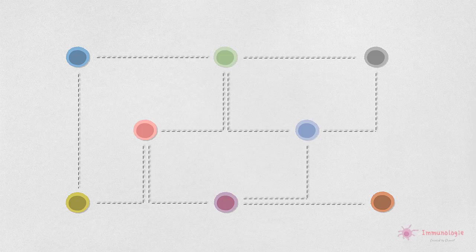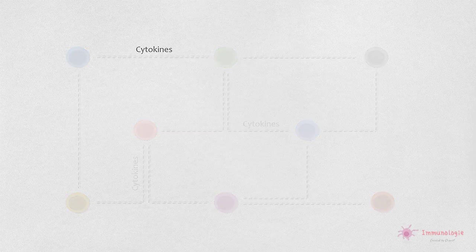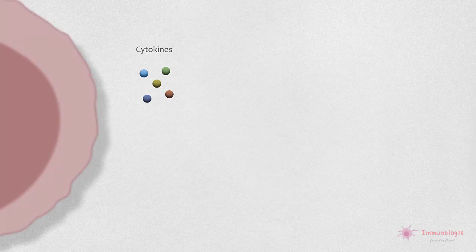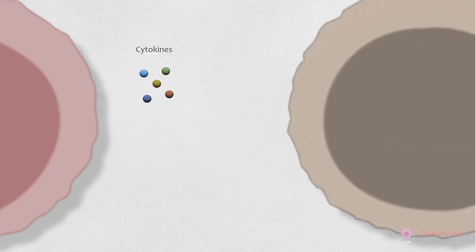Les protéines qui permettent la communication entre les cellules du système immunitaire sont appelées cytokines. Les cytokines sont de petites protéines produites par plusieurs types de cellules différentes, principalement les leucocytes, et qui influencent d'autres cellules de différents systèmes de l'organisme, en particulier le système immunitaire lui-même. La sensibilité d'une cellule cible à une cytokine particulière est déterminée par la présence d'un récepteur de cytokines spécifique.